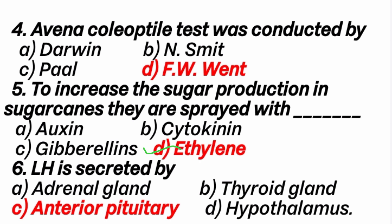Ethylene is the only gaseous hormone. 6th question: LH is secreted by? Answer is C option: anterior pituitary — that is the pituitary gland.